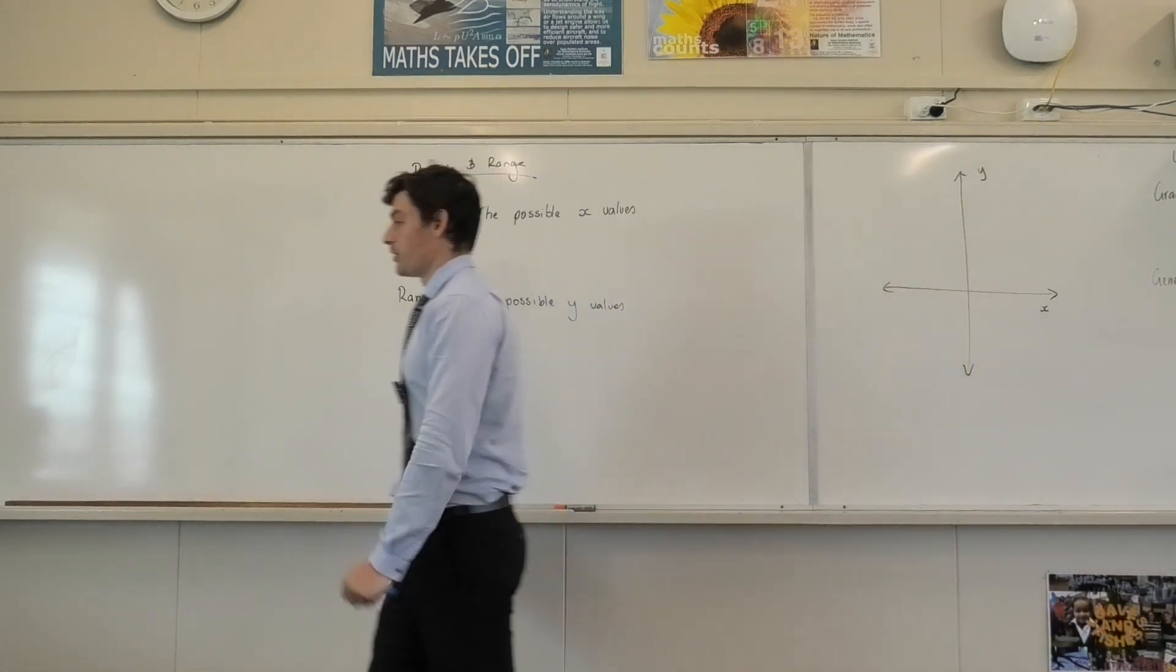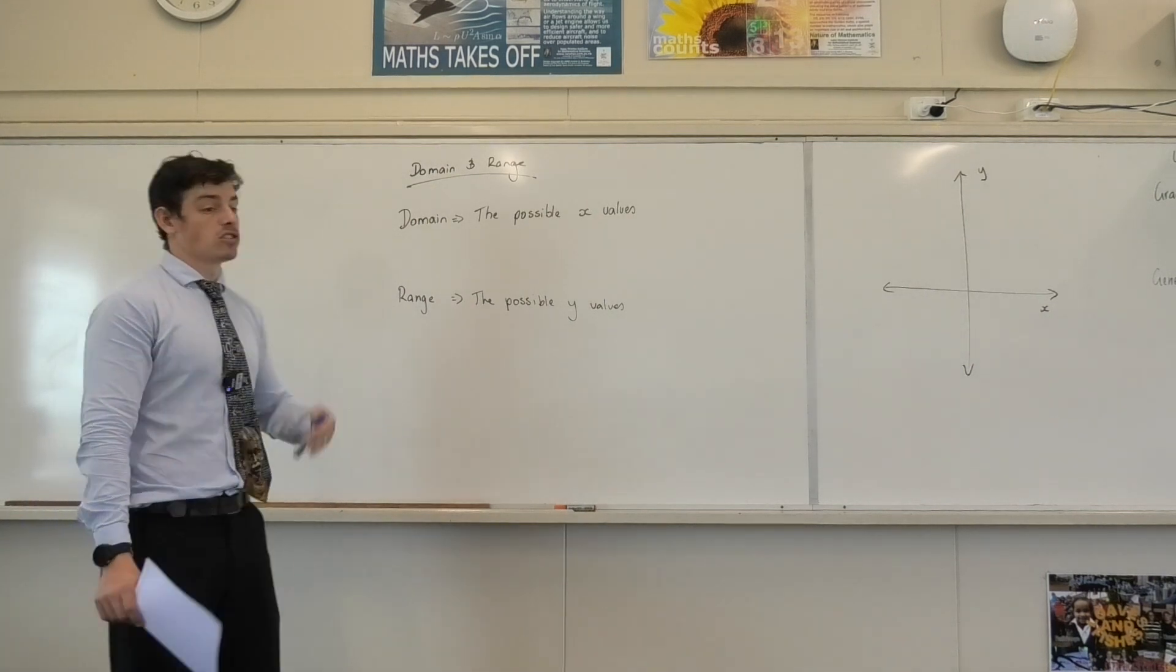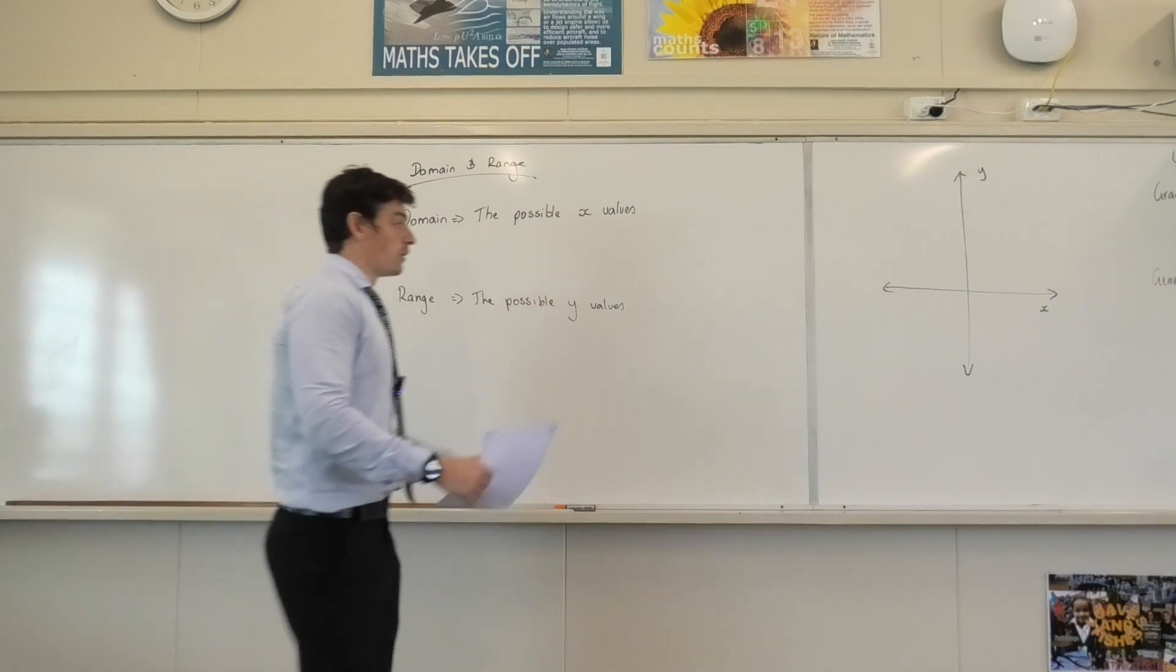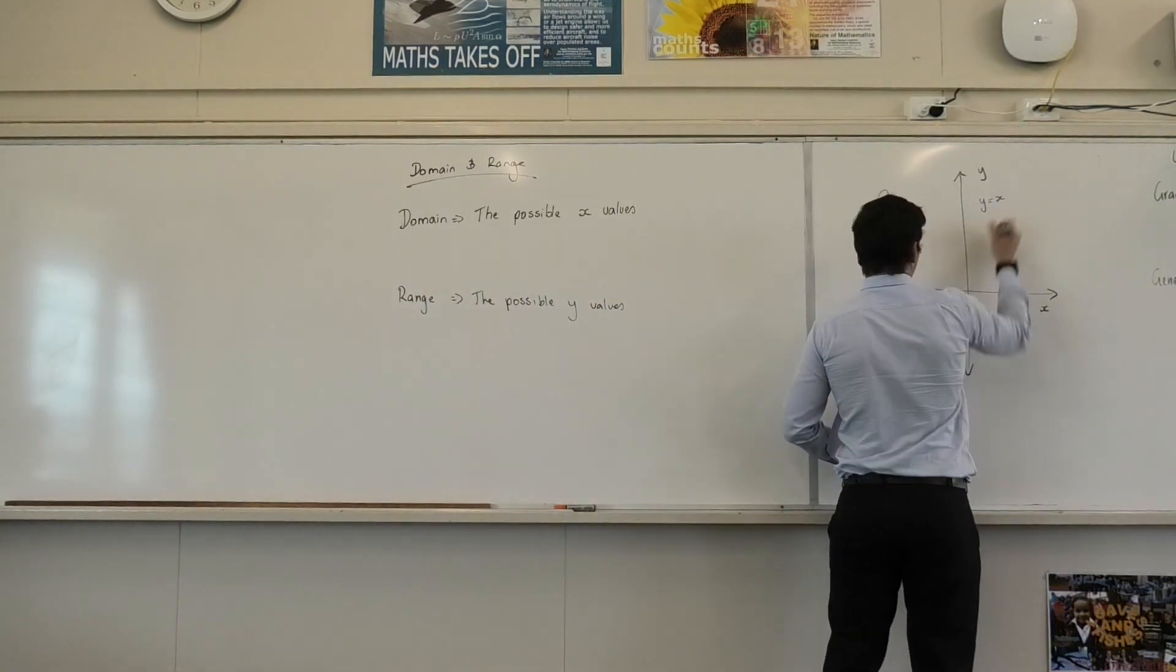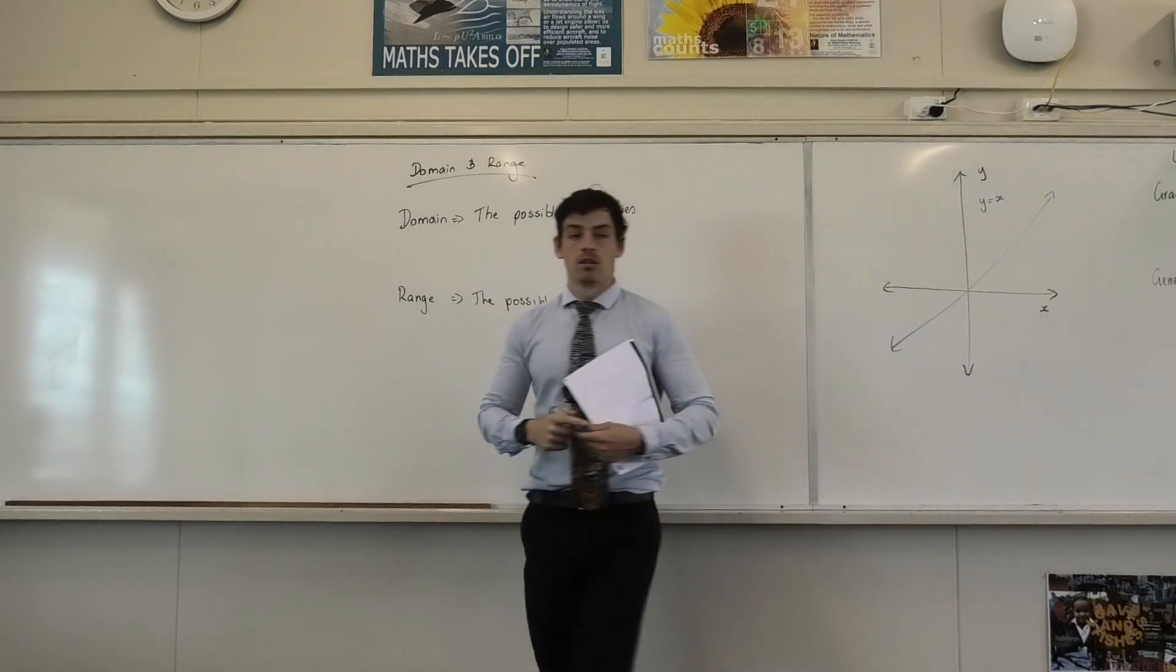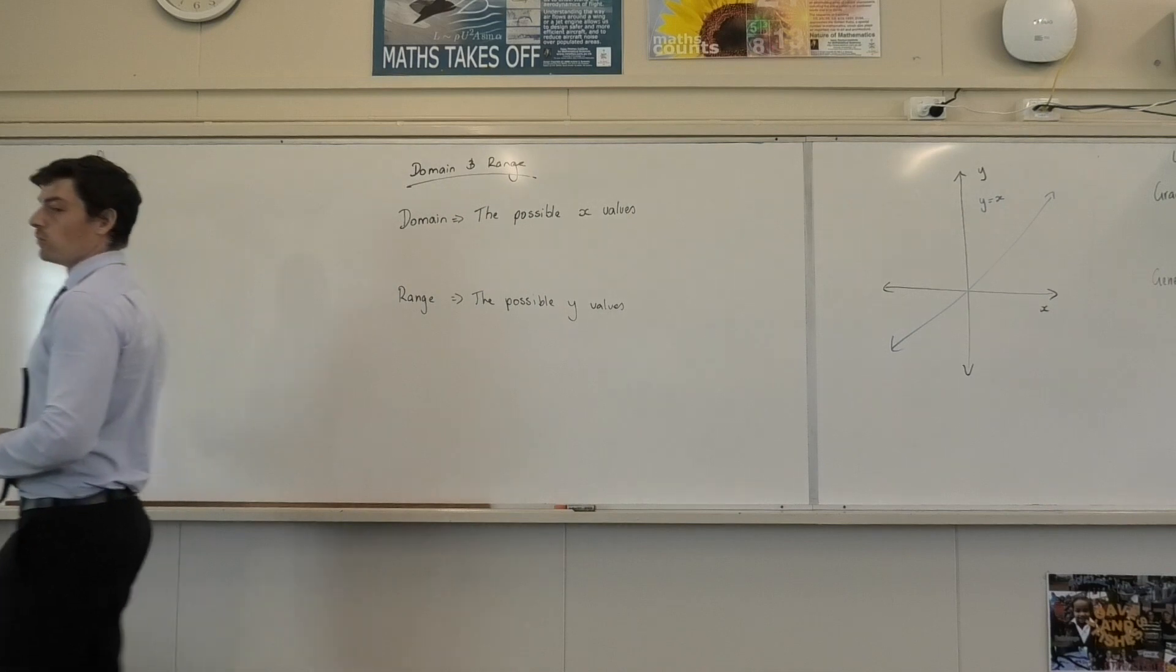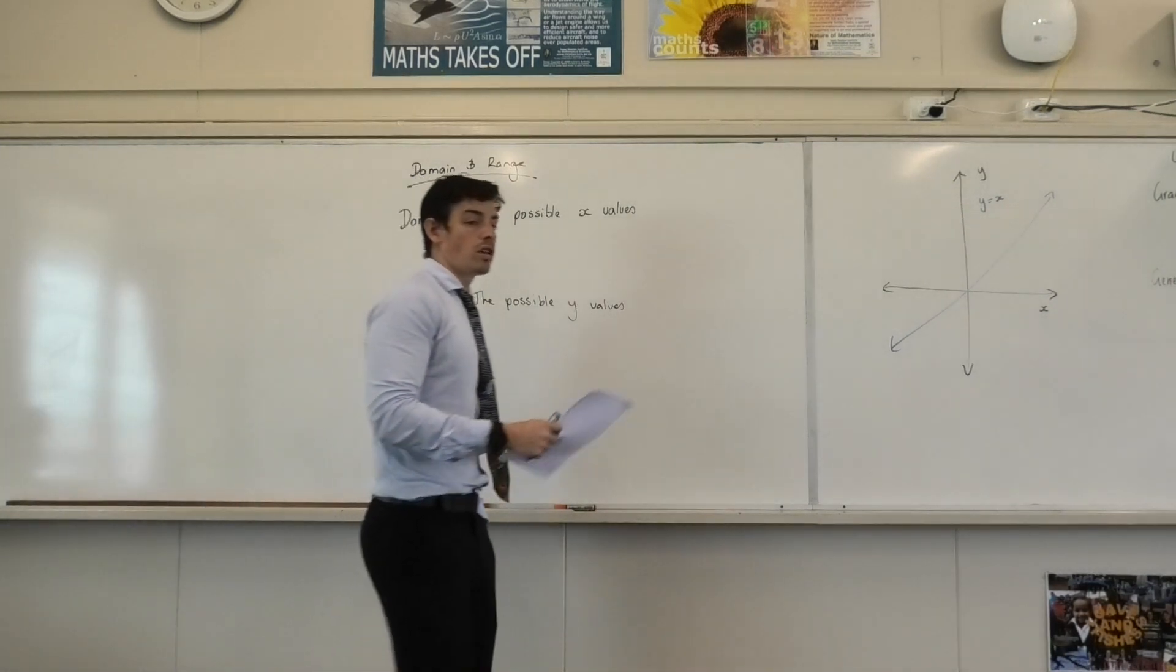So quite simply, the domain is a set of x values you can possibly have, and the range is a set of y values you can possibly have. So if I give you a linear function, let's just say y equals x, that's going to look like this, correct? What are the total set of x values I can get from that function? What can x equal?